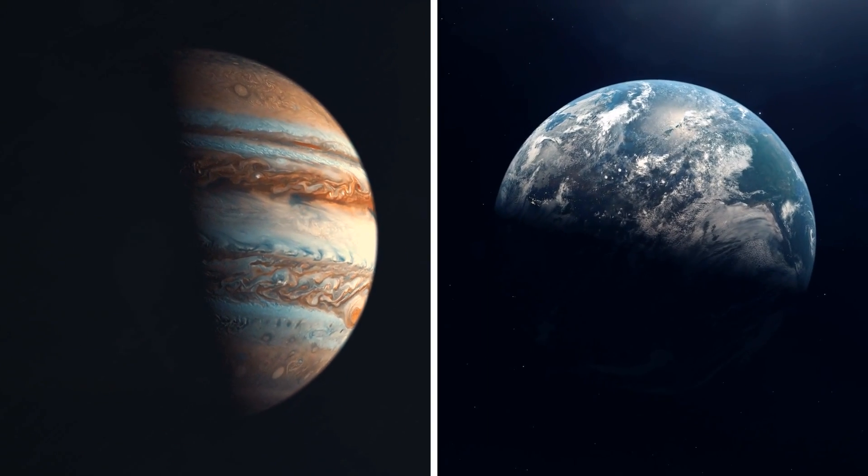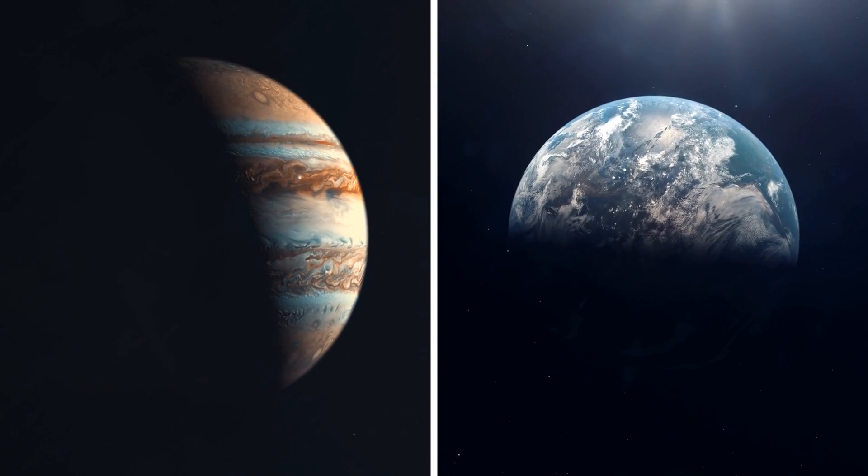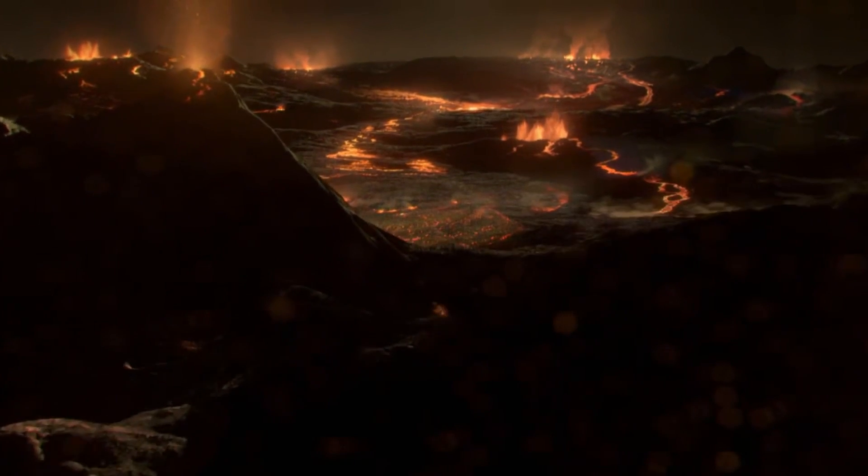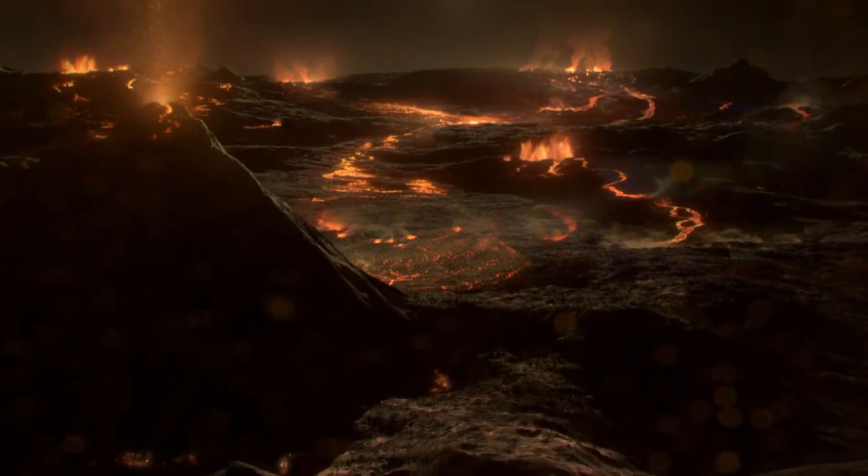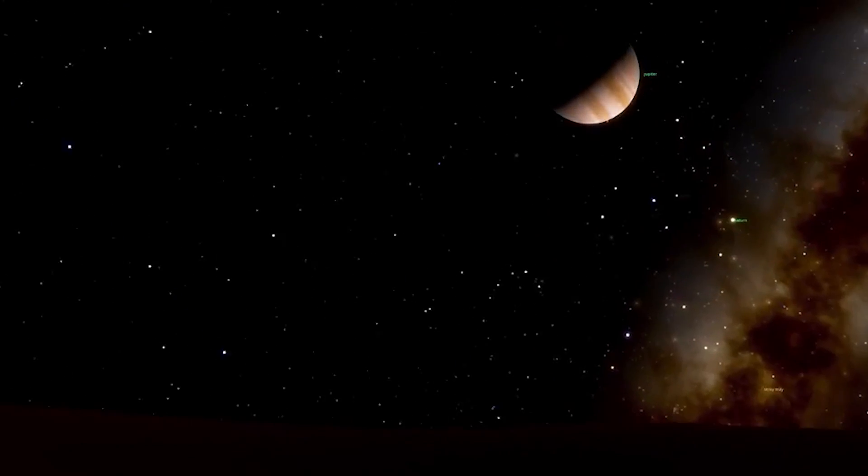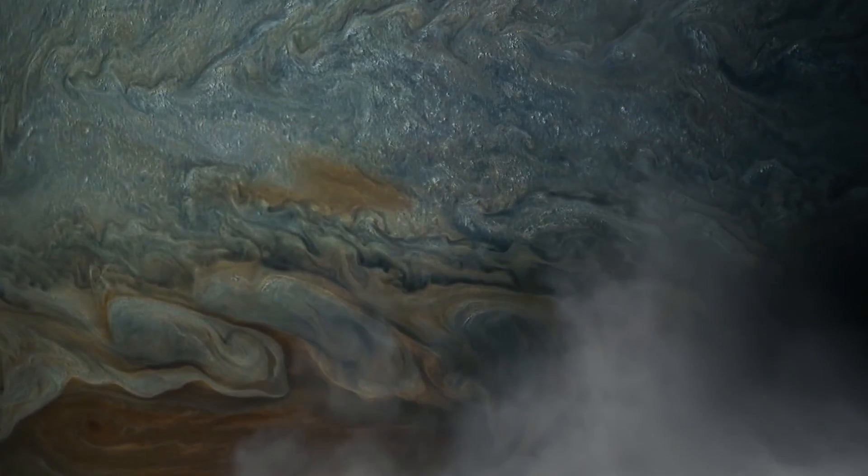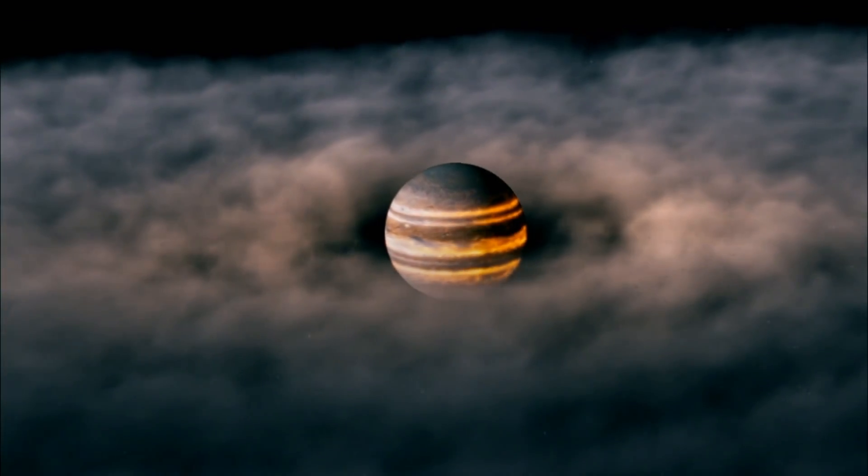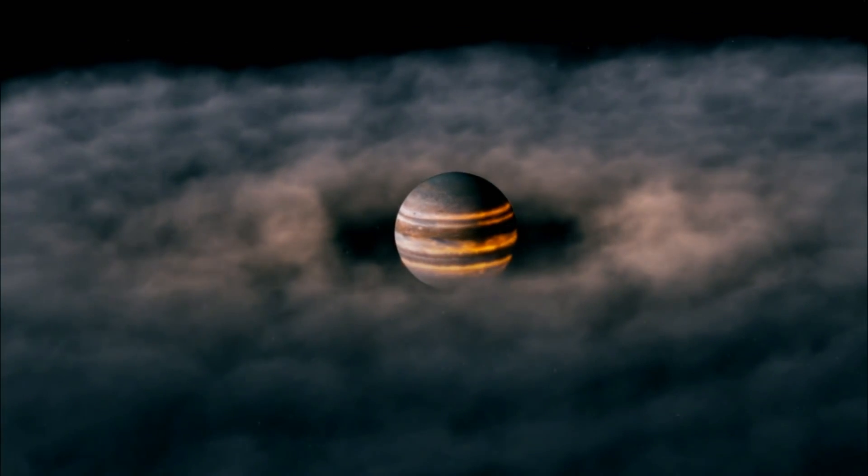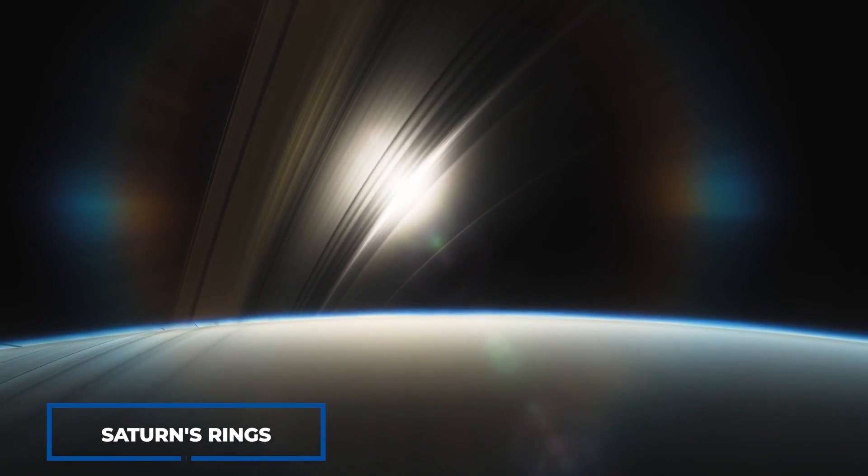Jupiter, unlike Earth, is a gas giant with no solid surface. Its principal constituents are hydrogen and helium. Jupiter is claimed to have the same fundamental ingredients as a star but was never large enough to explode into flames. It too has several rings, but they are darker and comprised of space dust rather than ice like Saturn's rings.